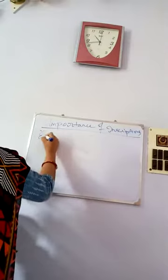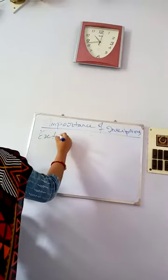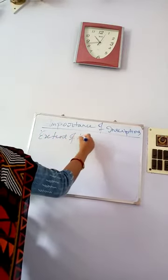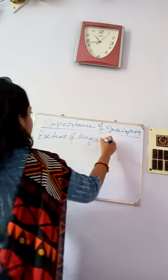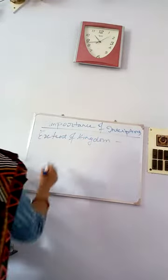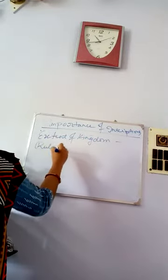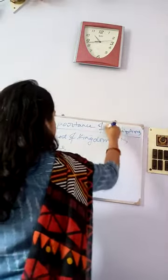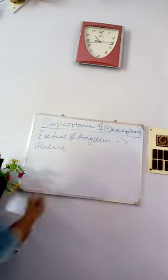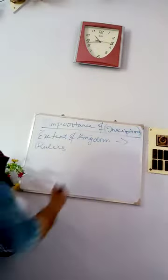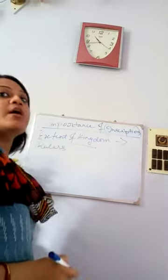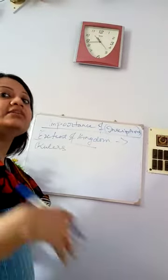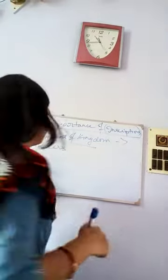Next is the extent of kingdoms. The extent of kingdoms of rulers is also established by inscriptions. They give us information about the boundaries and the extension of kingdoms of particular rulers like Ashoka, the Mauryan Empire, and other empires that existed in the past.